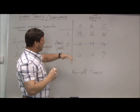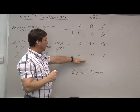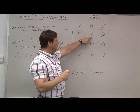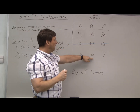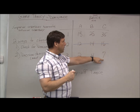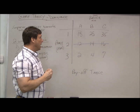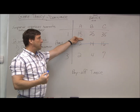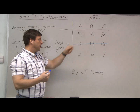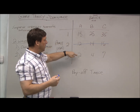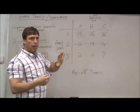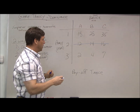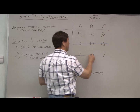We can also compare strategy one with strategy three. 15 is greater than 2, 25 is greater than 4, and 35 is greater than 7. So Andy, wanting to maximize, would always choose strategy one. If the 2 was up here and the 15 was down there, we wouldn't be able to say it's a superior solution, but in this case it is. So we can eliminate strategy three.